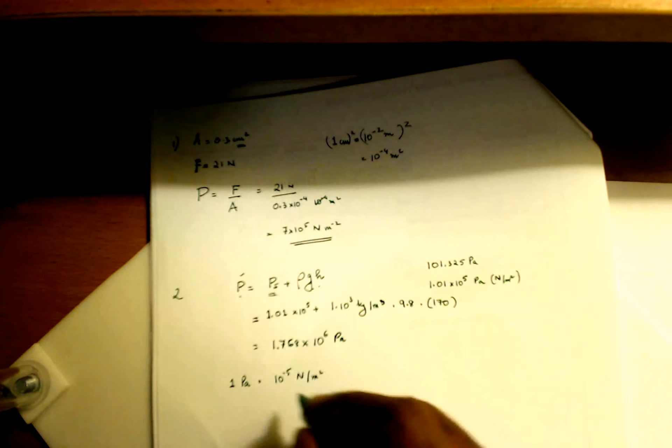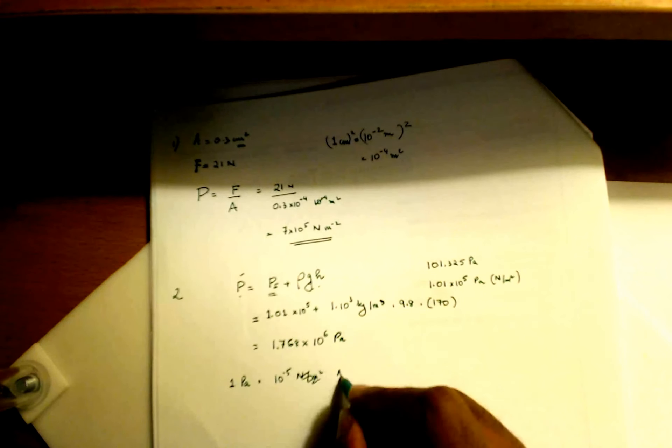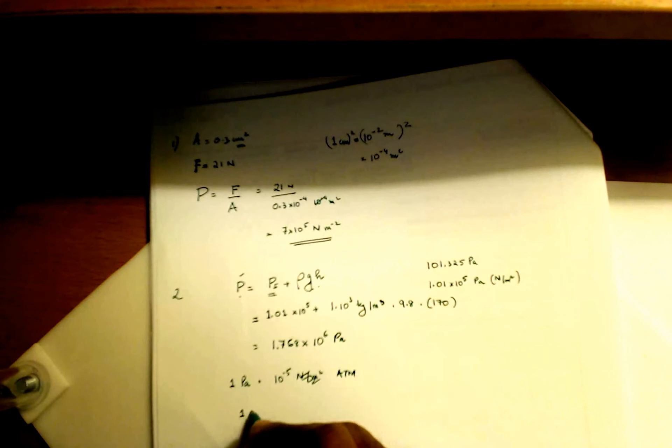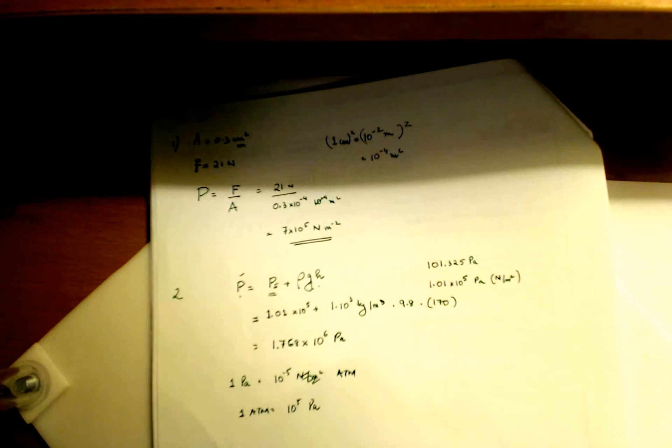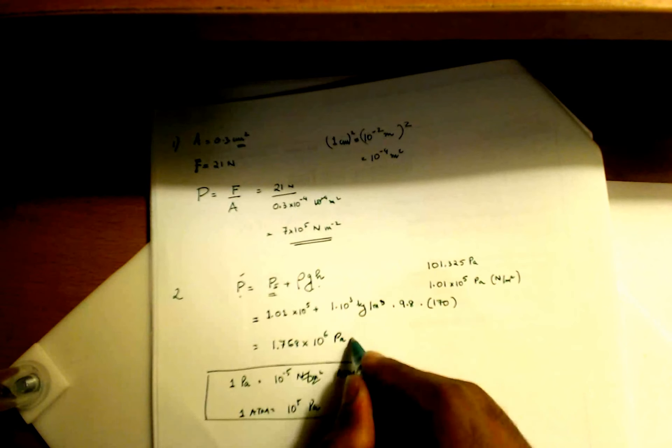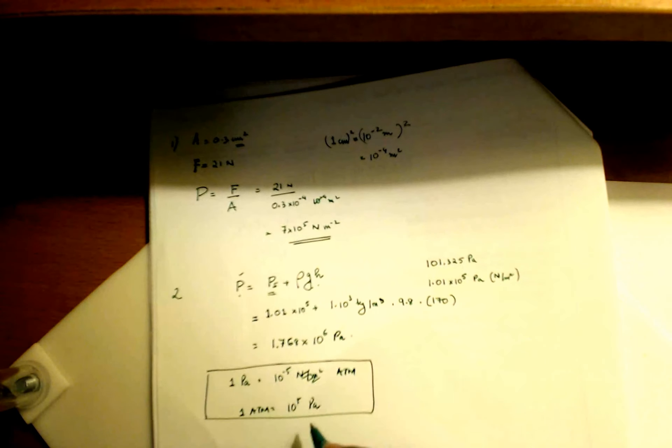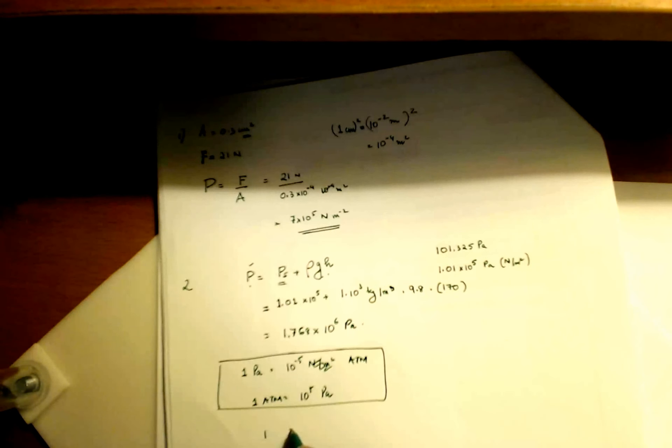Or one atmosphere is 10 to the 5 pascals, whichever way you want to look at it. So now if I want to convert this to atmospheres, if one atmosphere is 10 to the 5 pascals and I want to find out how many atmospheres is 1.76 times 10 to the 6 pascals, I cross multiply.